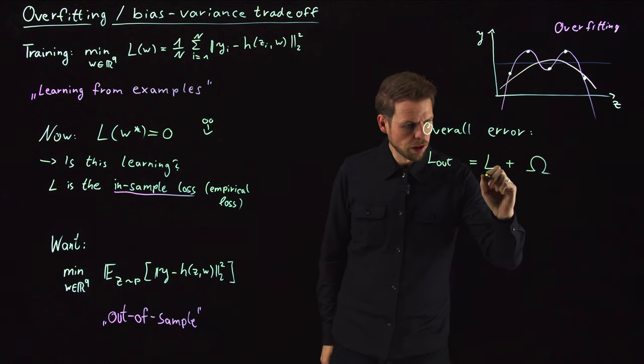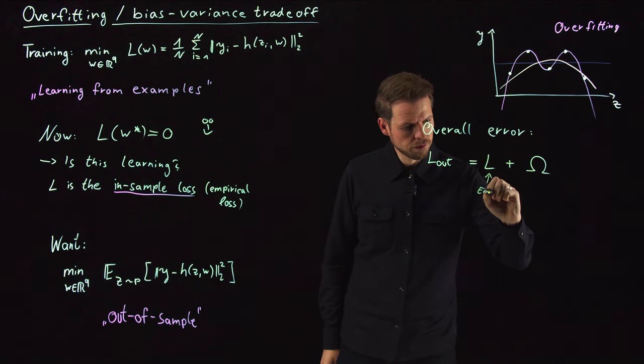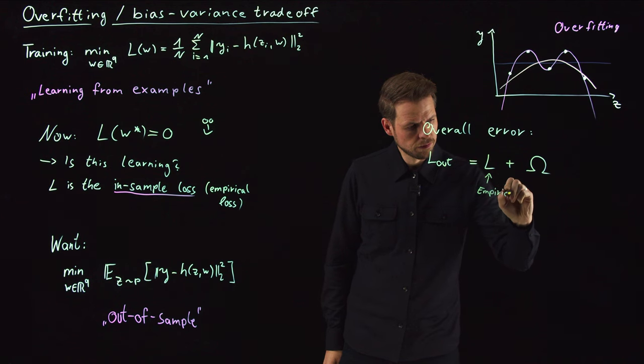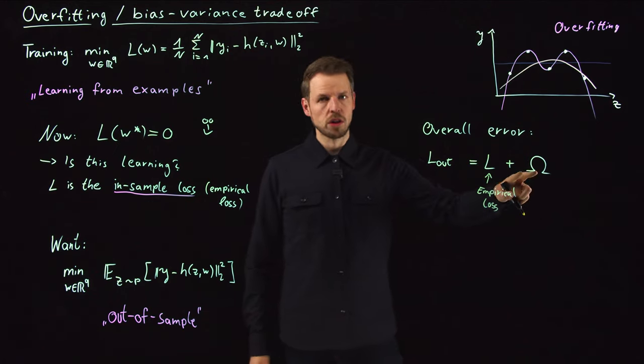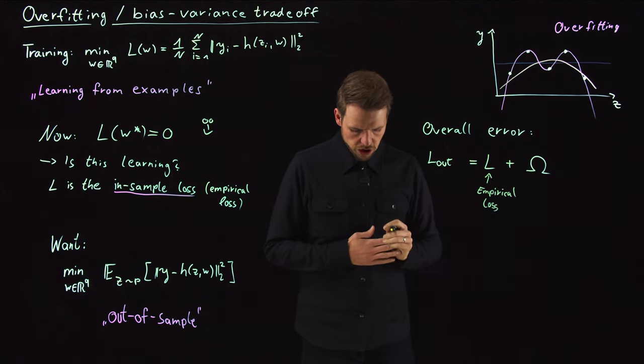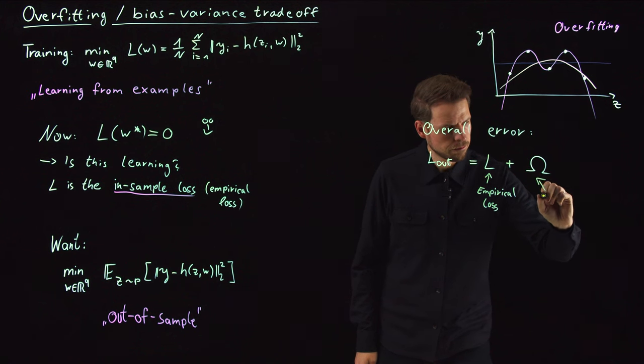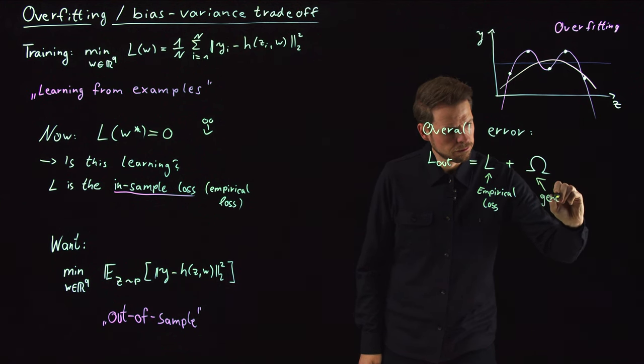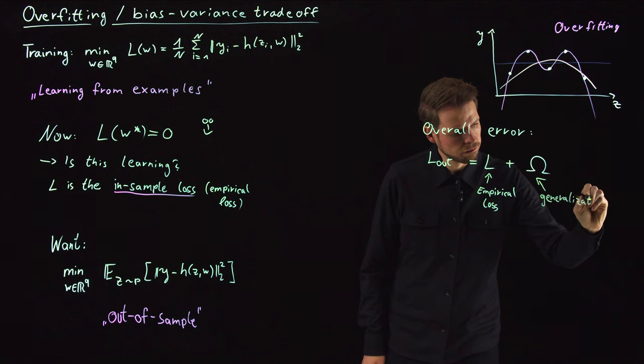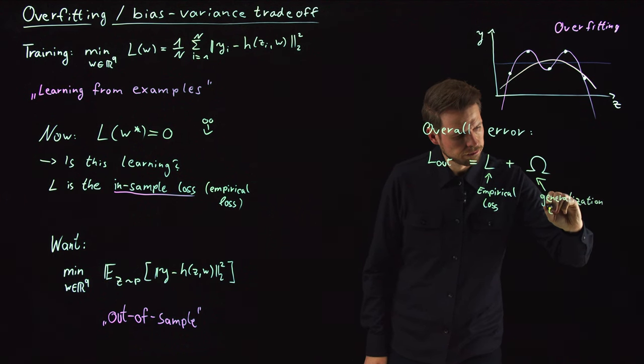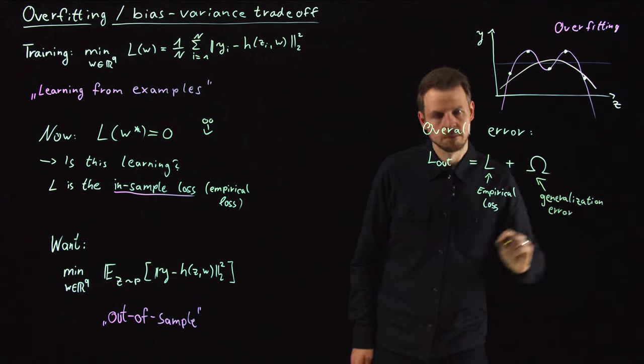The overall error is the out-of-sample performance, which is the in-sample loss plus some additional term. This is what we want to minimize. This is what we minimize in training - this is our empirical loss. And this is what we call a generalization error.